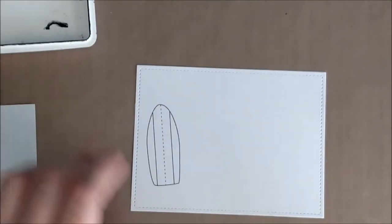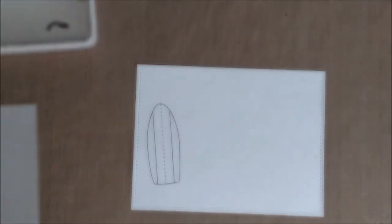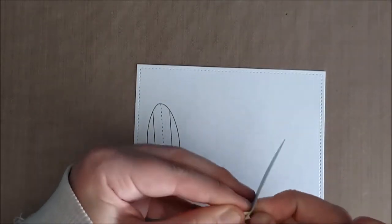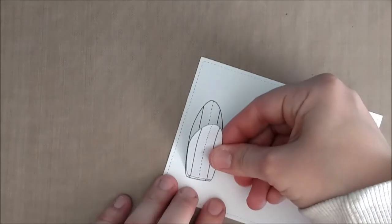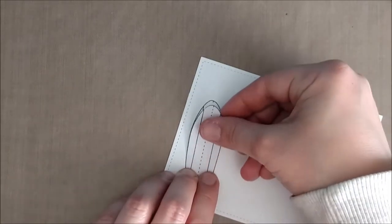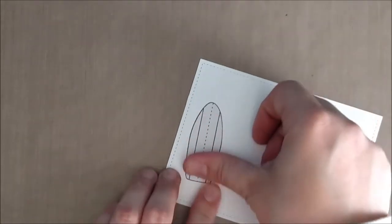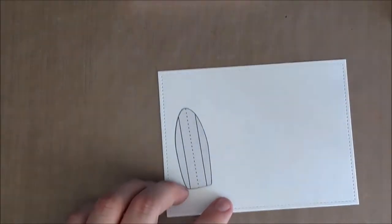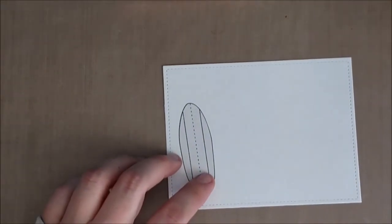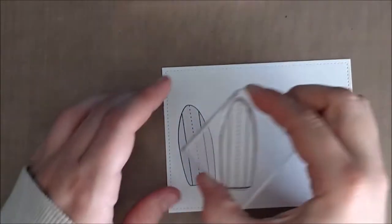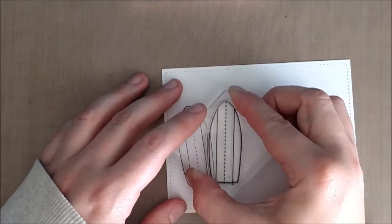I took the My Favorite Things black licorice hybrid ink and stamped that down on a stitched rectangle panel of Georgia Pacific 110 pound cardstock. I then layered the mask over the first stamping of the surfboard and I'm going to stamp the surfboard again.